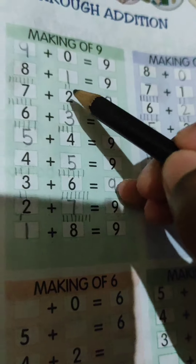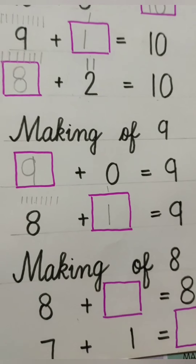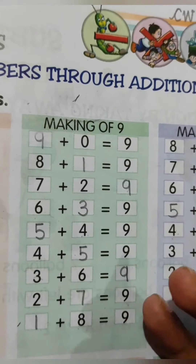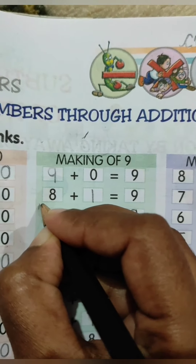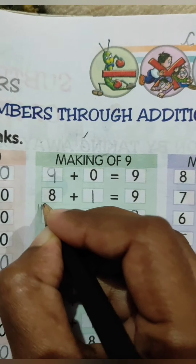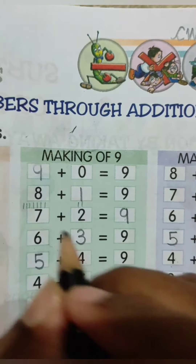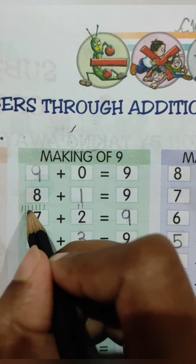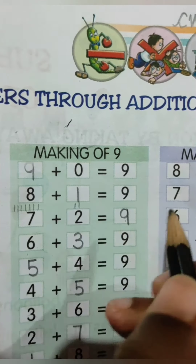अब बाकी questions हम यहाँ पे करेंगे. 7 plus 2 is equal to कितना? 7 के ऊपर कितनी lines खींचेंगे? 7: draw 1 through 7, then 1 and 2 more. अब साथ में count करेंगे: 1, 2, 3, 4, 5, 6, 7, 8, 9. So we will write here 9. 7 plus 2 is equal to 9.